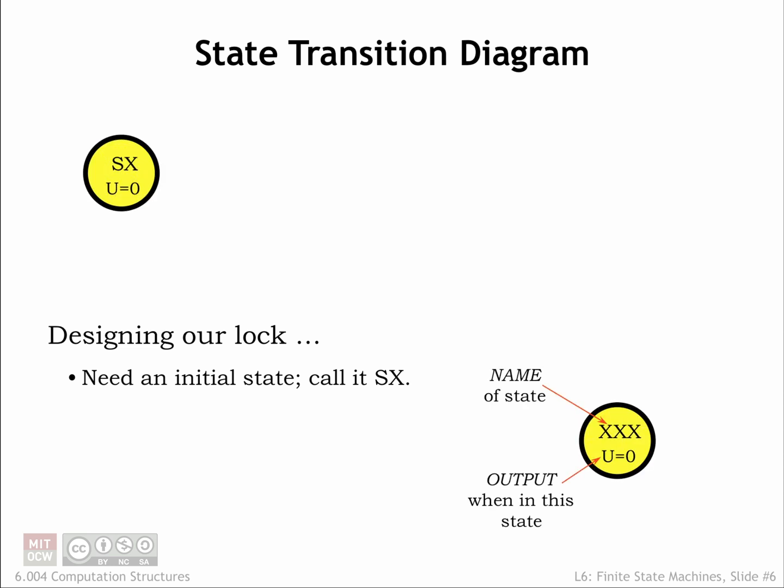In the state transition diagram, states are represented as circles, each labeled for now with a symbolic name chosen to remind us of what history it represents. For this FSM, the unlock output U will be a function of the current state, so we'll indicate the value of U inside the circle. Since in state SX we know nothing about past input bits, the lock should stay locked and so U equals zero. We'll indicate the initial state with a wide border on the circle.